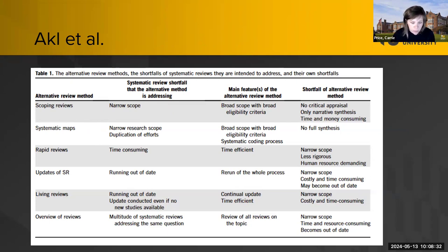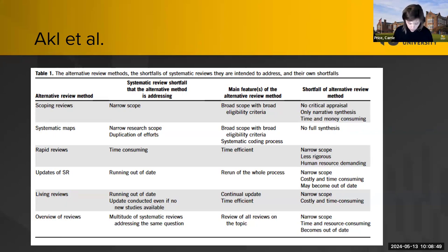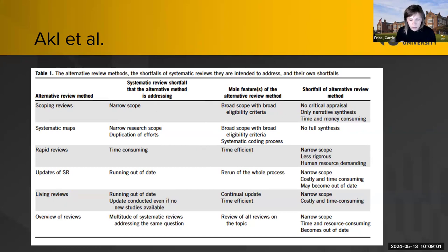They also cover systematic maps, rapid reviews, updates of a systematic review, and living reviews — another thing that came out during COVID — meant to continually update a publication so that the best evidence is always being considered, rather than saying 'this is our final publication and that's that.' And then an overview of reviews. These tables might help when you're trying to decide which review type to pursue for a specific question.